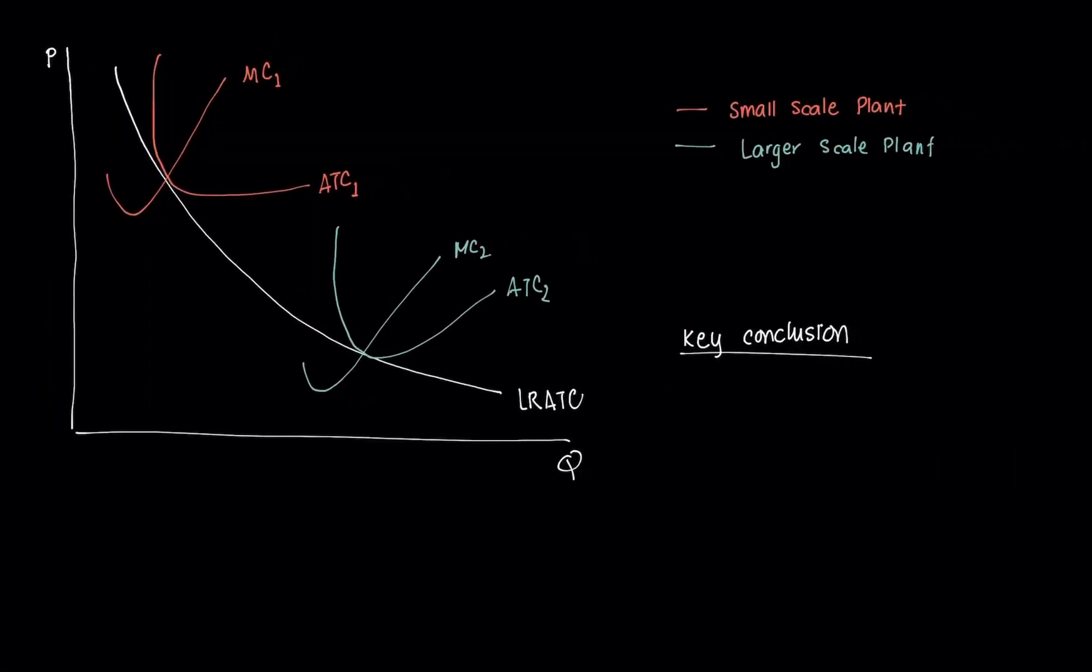Suppose we have a case here. The orange scale represents a smaller scale plant. We have marginal cost and average total cost curves here. For MC1 and ATC1, that's a small scale plant. Say that we have a production of Q here, Q1, at some level, say $50,000.